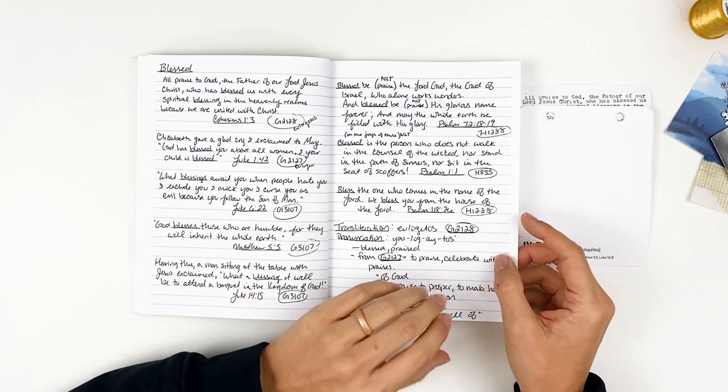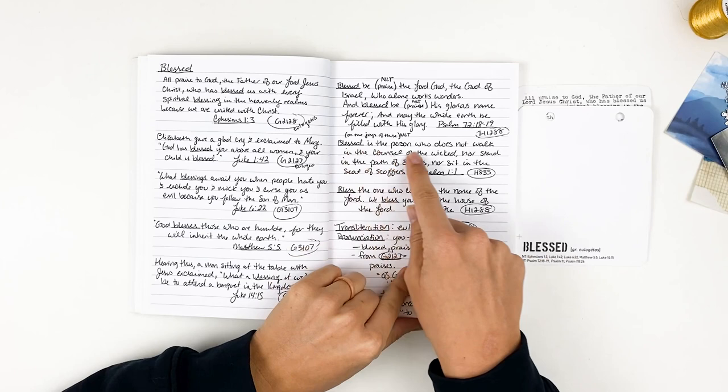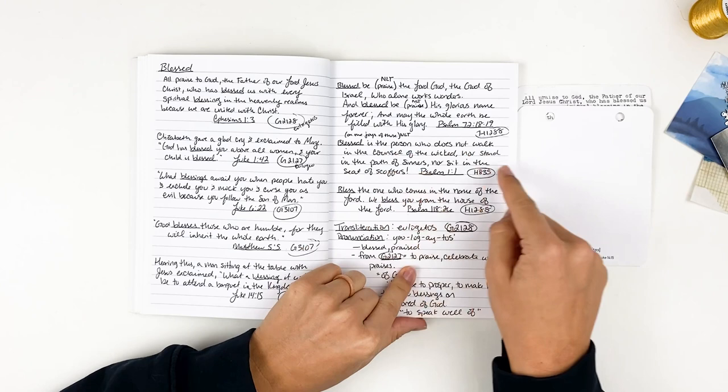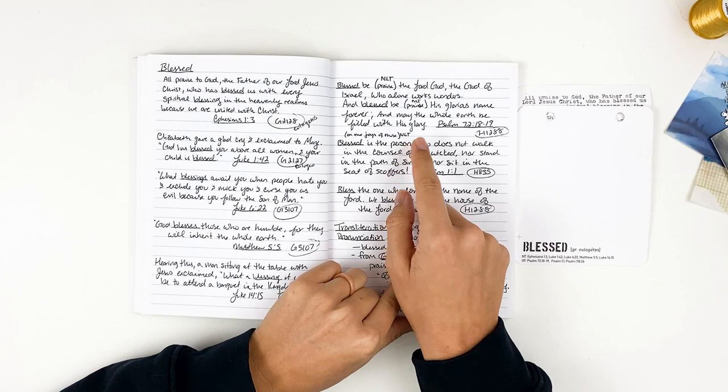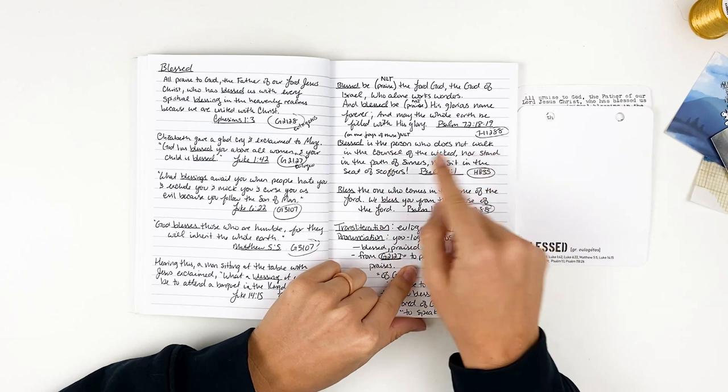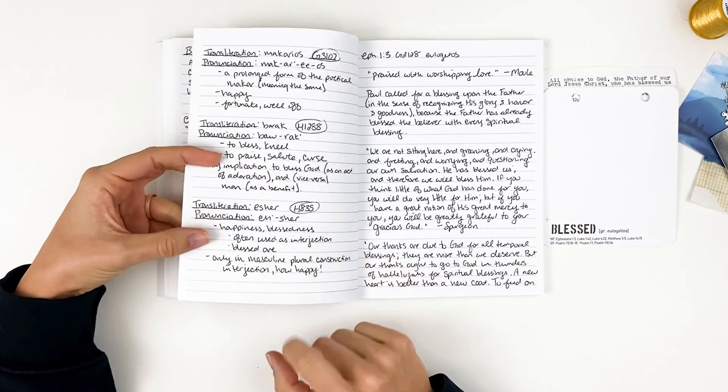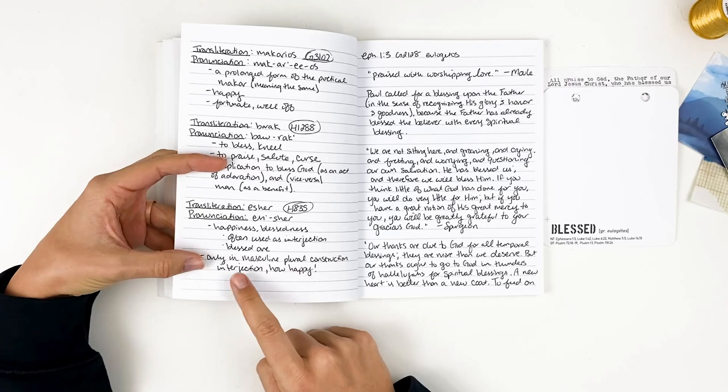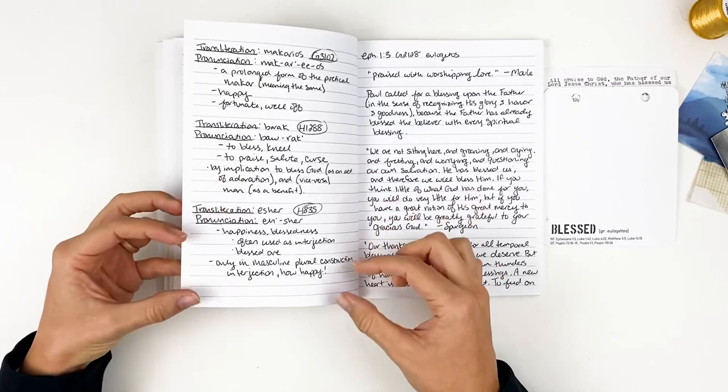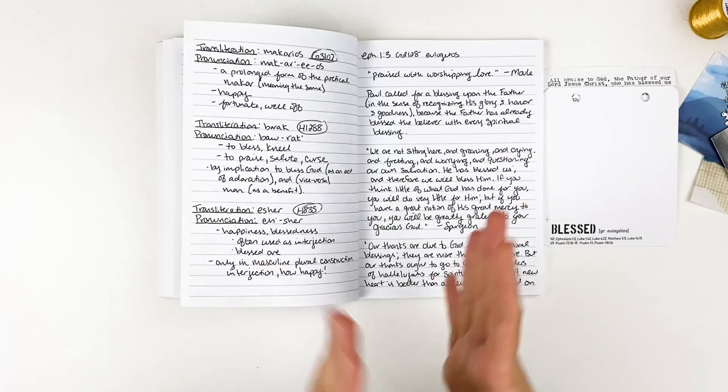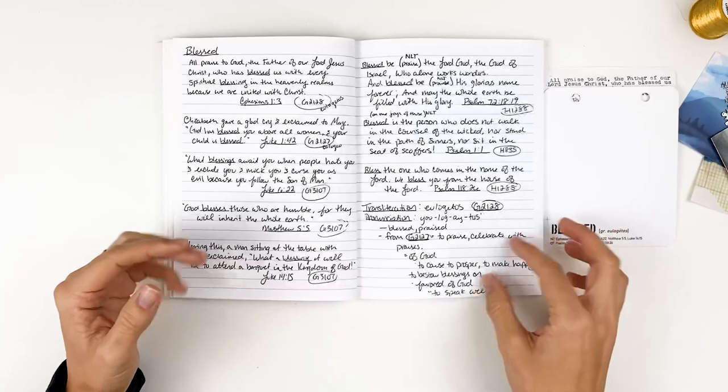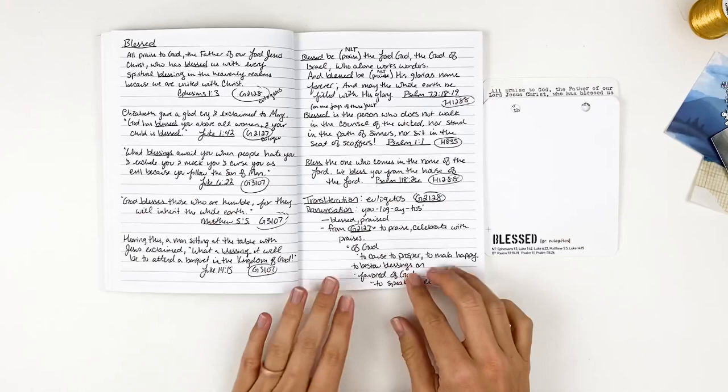Then we have another one, H835. So here we have blessed is the person who does not walk in the counsel of the wicked, nor stand in the path of sinners, nor sit in the seat of scoffers. That's Psalm 1:1. In the New Living Translation, it says, oh, the joys of those people who do not walk in the counsel of the wicked. So if we look at H835, that word is esher, happiness, blessedness, often used as an interjection, blessed are, only in masculine, plural construction, interjection, how happy. So this is a very specific, when you look at grammar, this is used in specific grammatical instances, is this word. And that's why I enjoy doing these word studies.